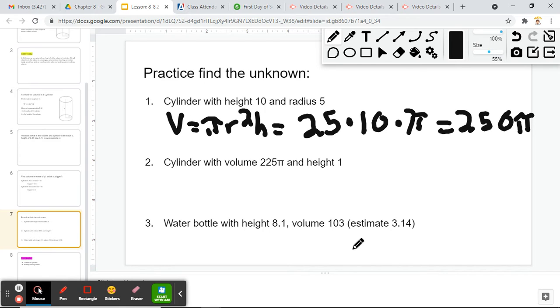A cylinder has a volume of 225π and a height of 1. So we know our volume, which would be 225π, and that's equal to our radius squared times π times our height, which is 1. This should actually be 225π.